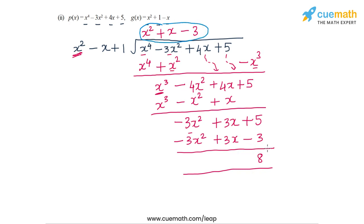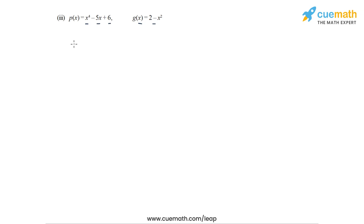That completes part two. In part three the dividend polynomial is x⁴ - 5x + 6, so there is no cubic term and no quadratic term. The divisor is 2 - x², a quadratic polynomial. We write the divisor with terms in order of degree as -x² + 2.